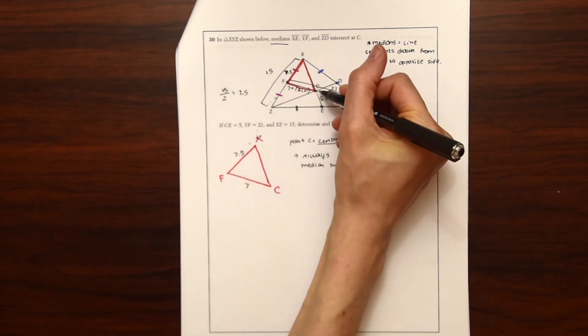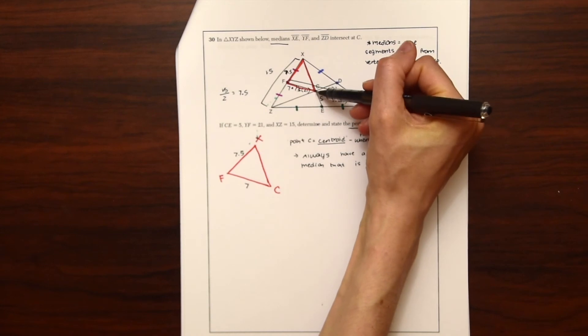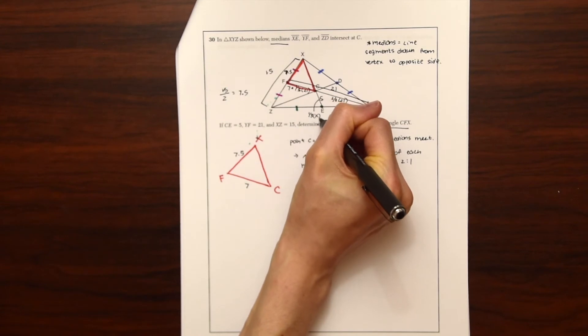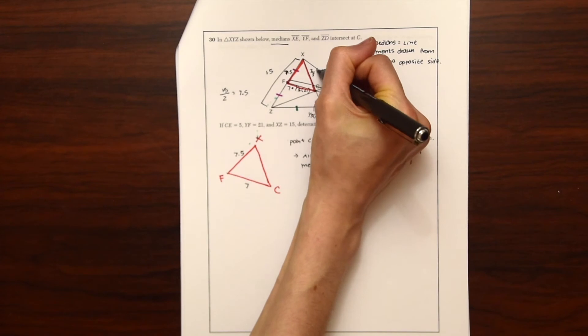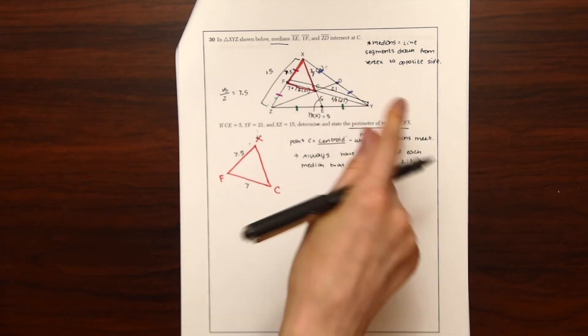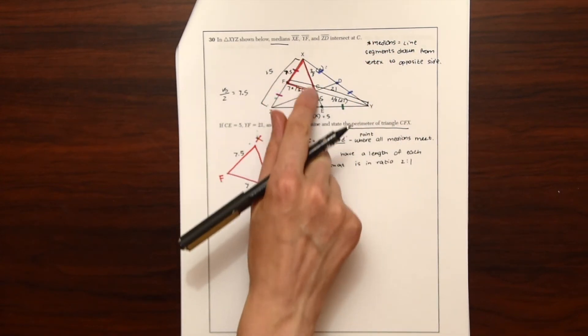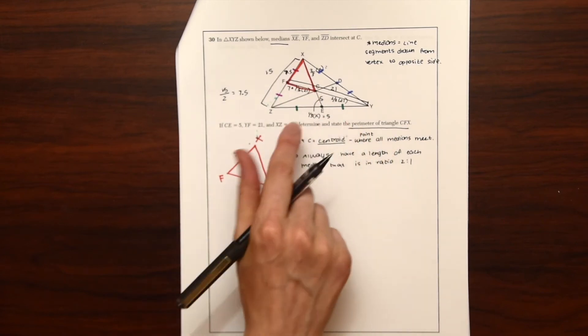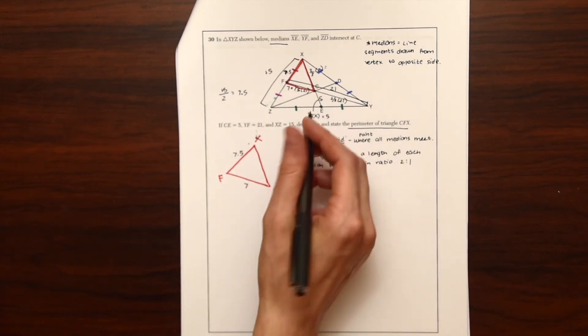And down here we were given this value CE. So if we know that one third of some number is equal to 5, that means two thirds of that same number will give us the length of XC, which is the last part we need to find the perimeter of this triangle.